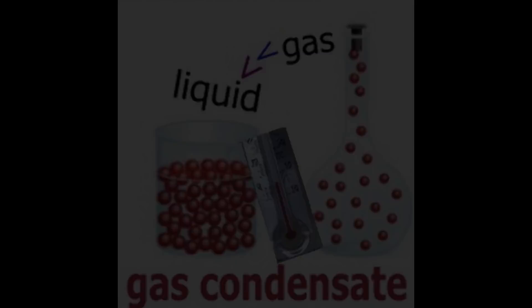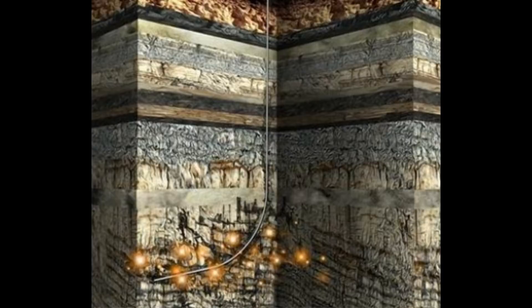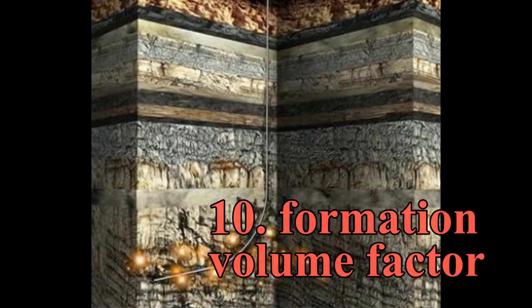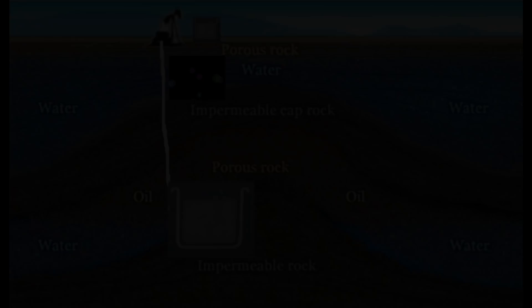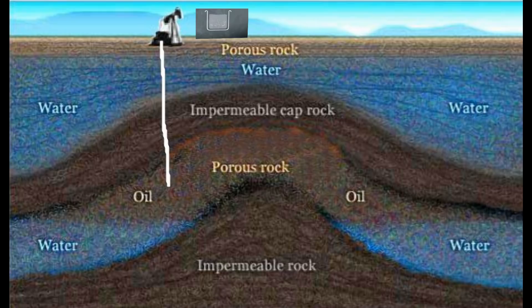Now, the next one is the formation volume factor. When crude oil travels from formation pressure to surface pressure, the existing solution gas converts to gas and is released causing the volume of most oils to shrink. This shrinkage is called the formation volume factor and its symbol is beta when it is brought to the surface.